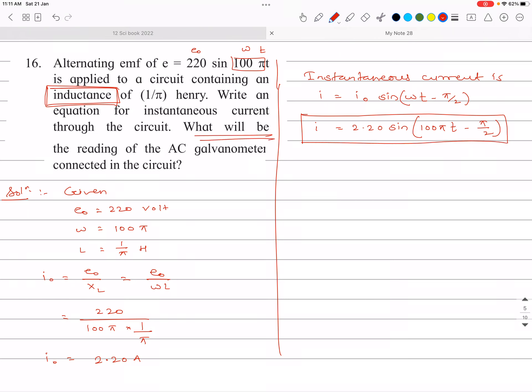What will be the reading of the AC galvanometer connected in the circuit? The AC galvanometer shows IRMS current. IRMS = I0/√2 = 2.20/1.414 = 1.555 amperes. This is the RMS value of the current shown by the AC galvanometer.